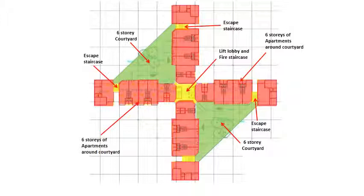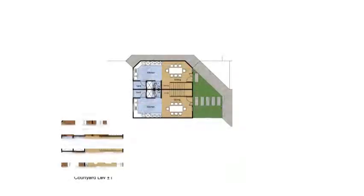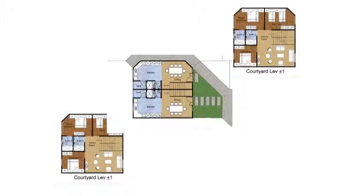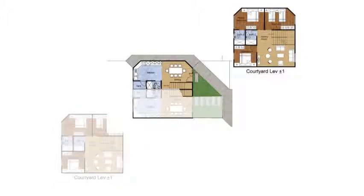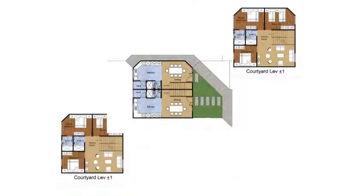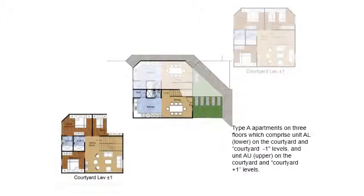Let's look at a portion of this plan as a basic module. The basic module in this layout comprises two double-storey apartments which occupy three floors, one placed on top of the other, such that access to both apartment units are on the courtyard level. One unit is connected to another floor above the courtyard level, and the other apartment is joined to the floor below the courtyard level.